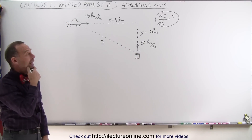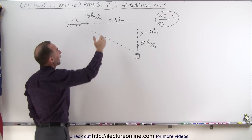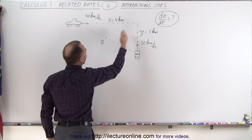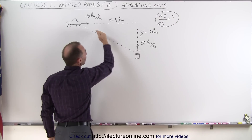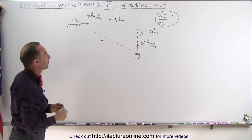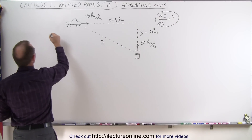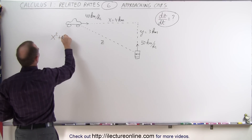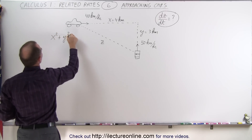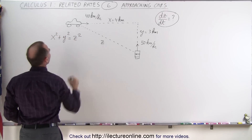The way to do that is to find a relationship between x, y, and z. Since this is a right triangle, we can use the Pythagorean Theorem. We can therefore say that x squared plus y squared is equal to z squared.